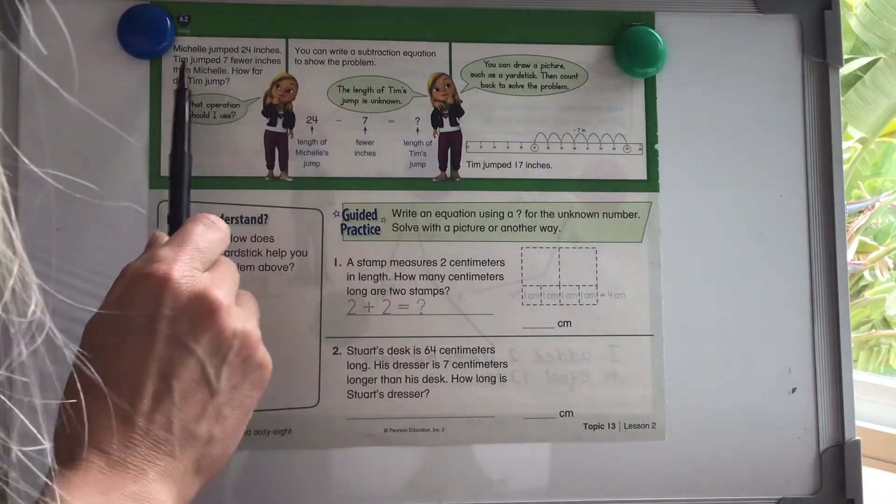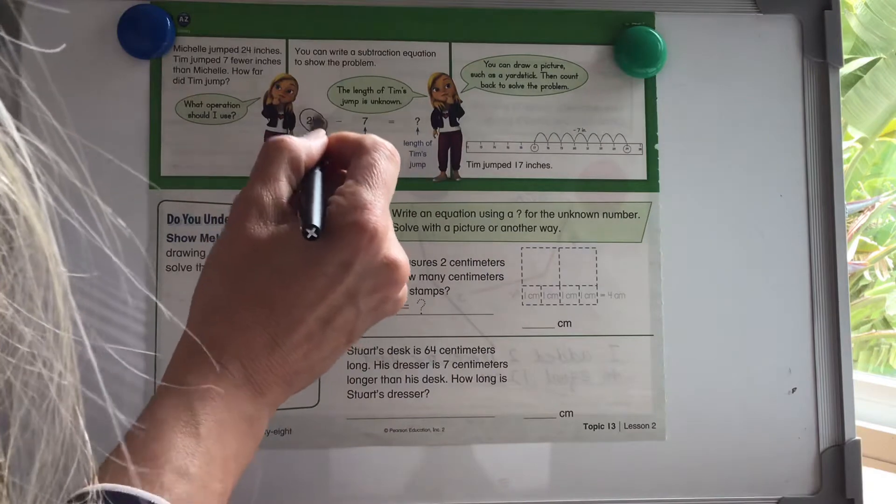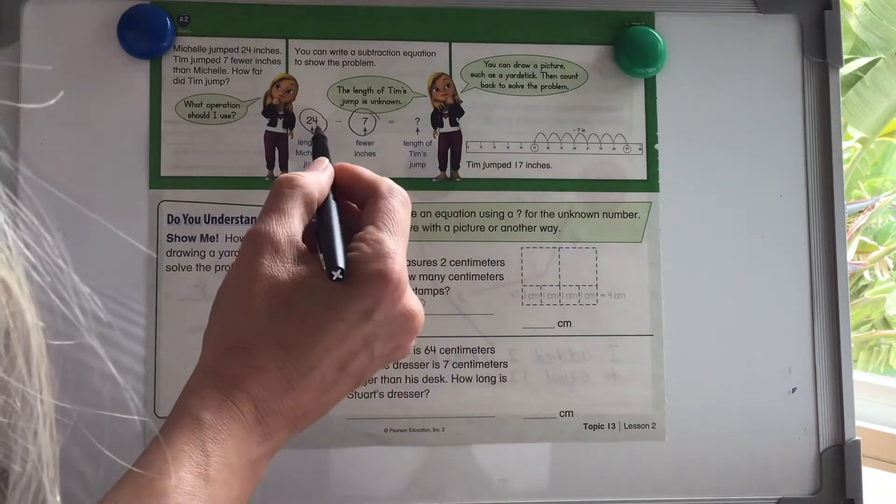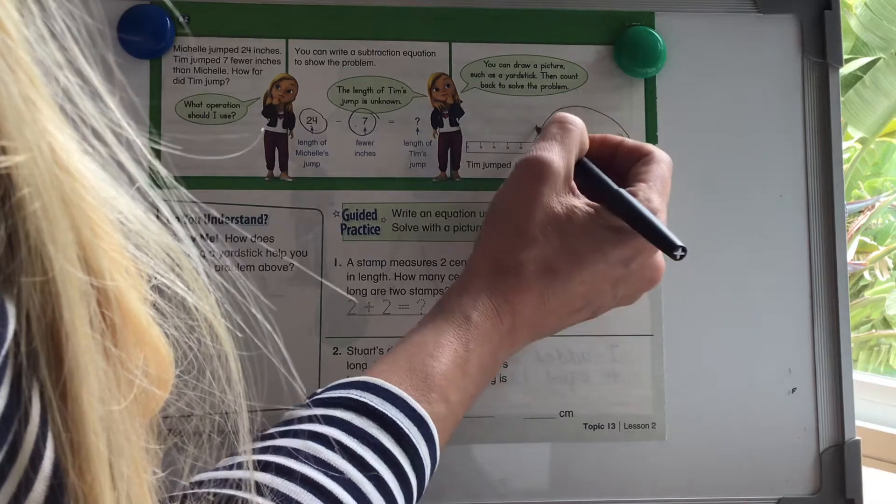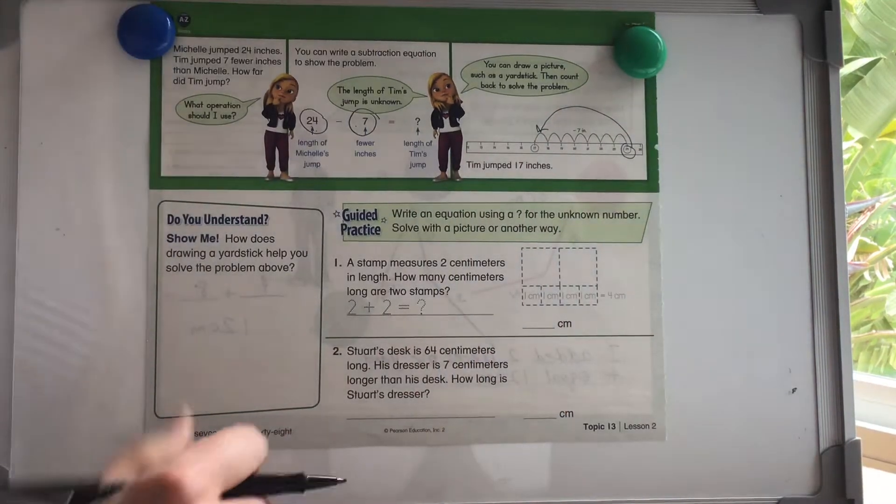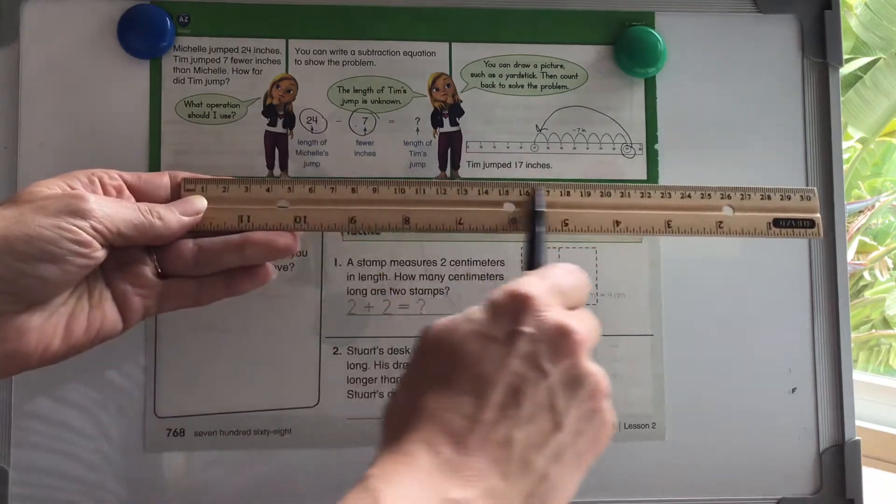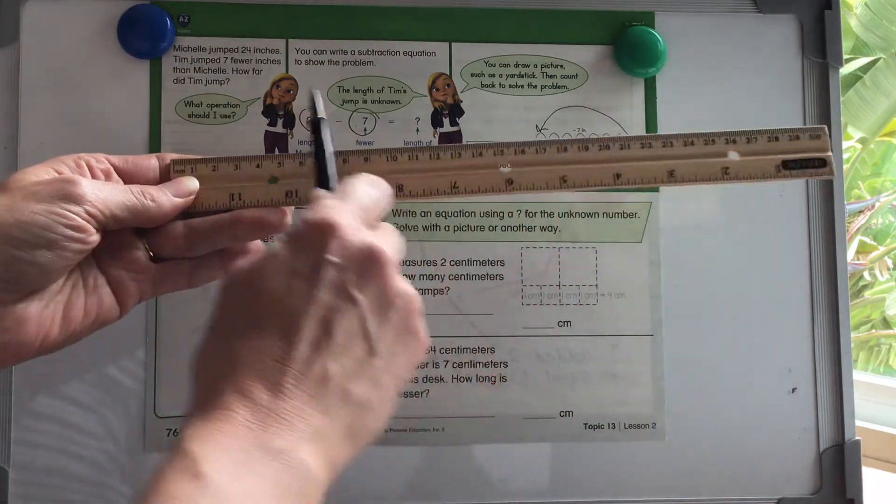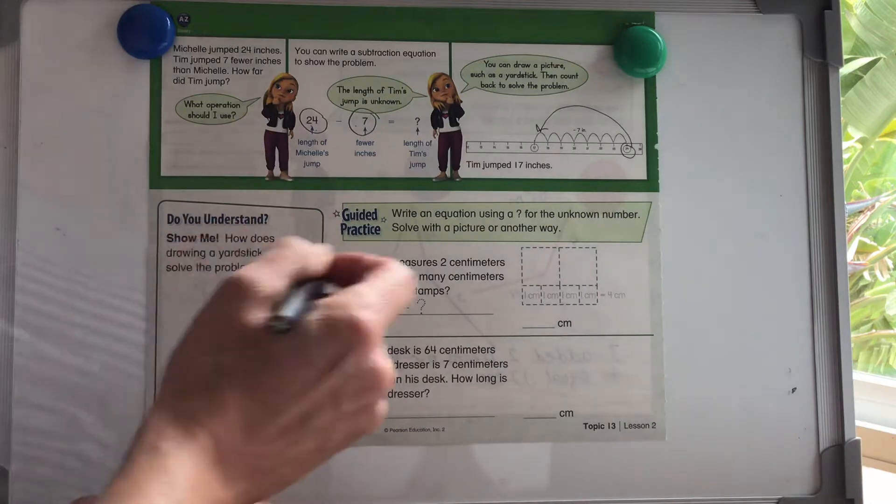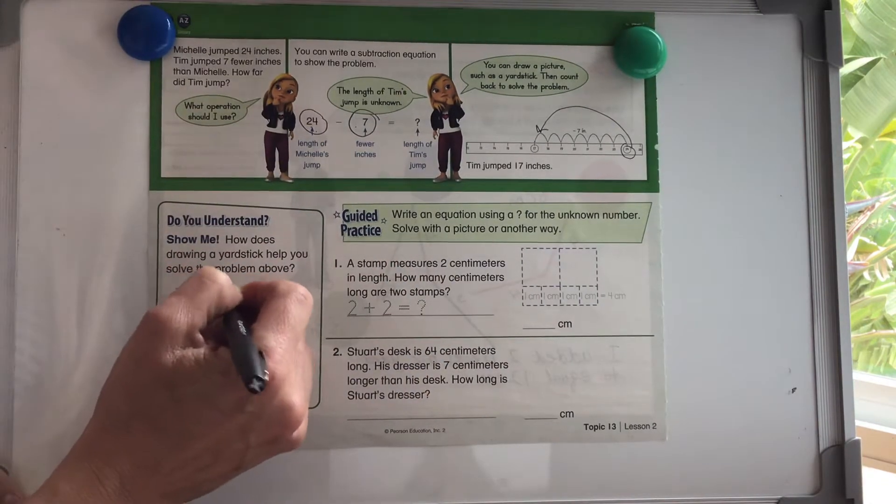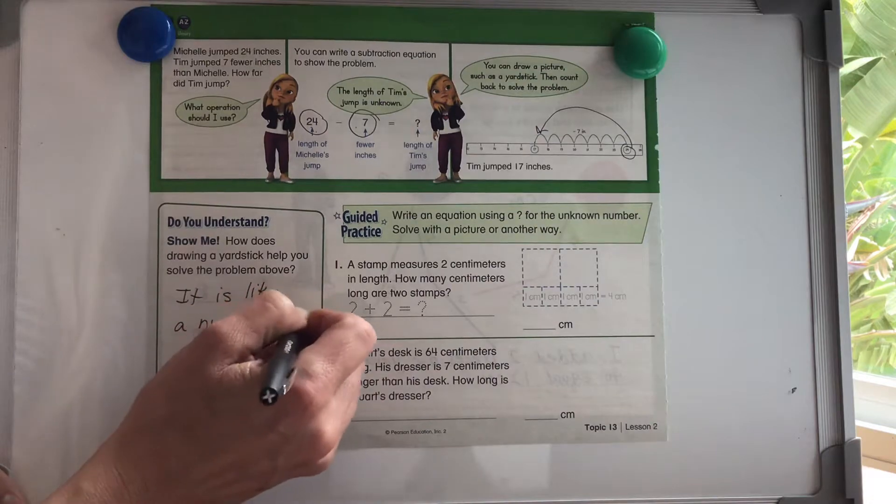Michelle jumped 24 inches. Tim jumped seven fewer inches than Michelle. How far did Tim jump? So we know the total length of Michelle is 24 minus seven fewer from Tim. 24 minus seven. So you can use a number line and you know that 24 minus seven will take you to 17. And they use this kind of as a number line looks a lot like yardsticks and rulers. Take a look at that. They're numbers that go forward. And if you head this way, they get smaller. If you go this way, they get larger. So they use kind of a yardstick, which is like a number line. How a yardstick helps you solve the problem above. You can say it is like a number line.